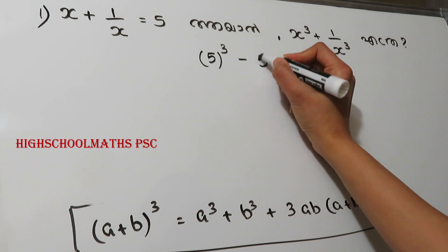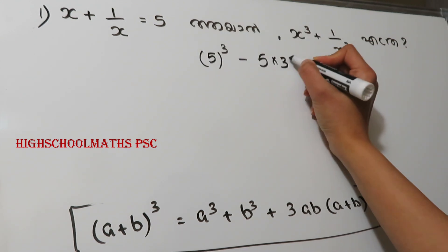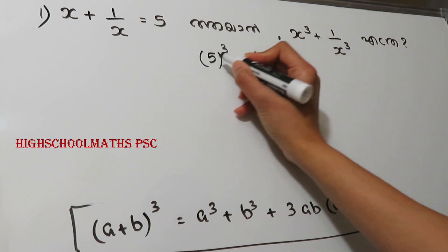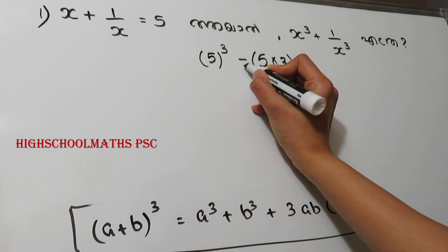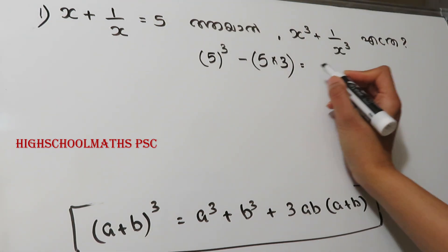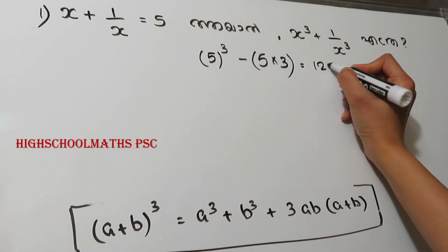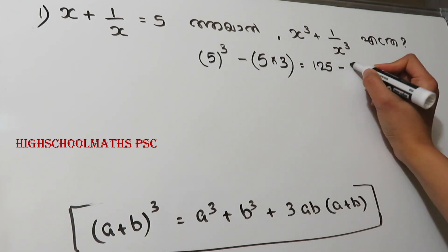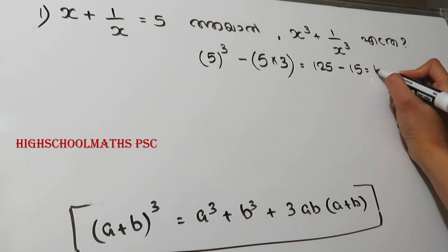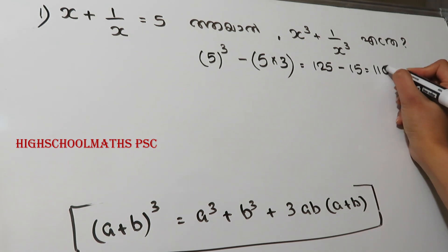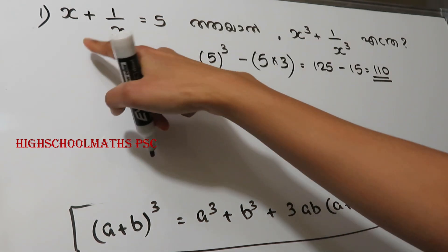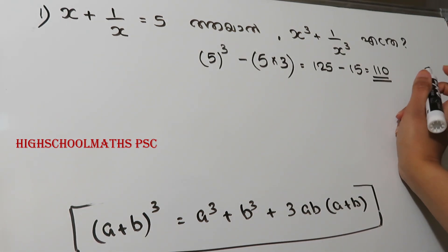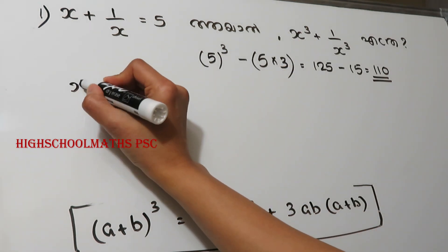Let's write the number of cubes. We will discuss the number of cubes. If we multiply the cube, then we multiply using x-cubed plus 2 by x-cubed minus 1 by x-cubed. 5 into 3 is 15 and 20 into 25 is 100. That is the answer. If x plus 1 by x equals 5, then x-cubed plus 1 by x-cubed is the value. Let's get the answer.